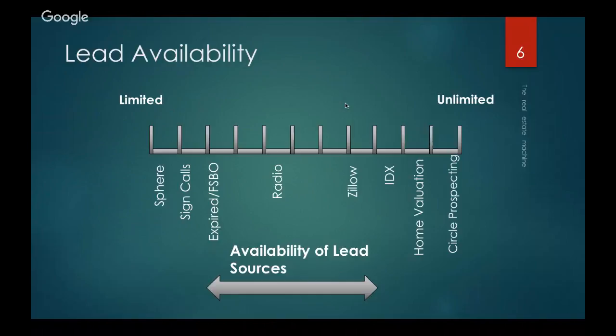Lead availability is also related to the source. Sphere, sign calls, and expireds are limited — you only have so many people in your sphere, so many signs out, and so many expireds per day. Radio is a little less limited, but still not unlimited. Zillow, IDX, home valuation, and circle prospecting are where you start hitting more unlimited fields, continuously calling neighborhood after neighborhood.